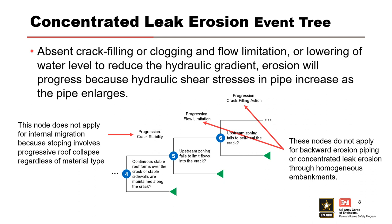There are some common mistakes associated with other internal erosion processes when such event trees are used. For example, a stable roof for node 4 is not applicable for internal migration because stoping involves the progressive roof collapse, regardless of material type. Therefore, this node should be eliminated or modified to 'must not clog by adjacent materials.' Node 5, flow limitation, and node 6, crack filling, are neither applicable for backward erosion piping or concentrated leak erosion through a homogeneous embankment.